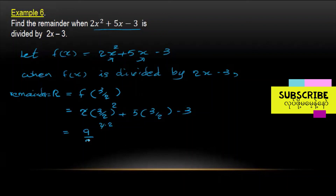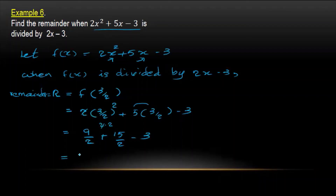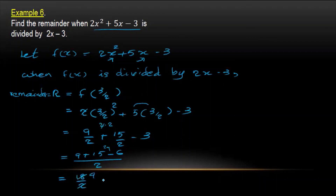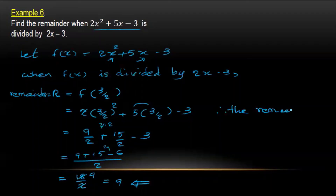Substituting x equals 3/2: 2 into (3/2) squared plus 5 into (3/2) minus 3. That gives 2 into 9/4 plus 15/2 minus 3, which equals 9/2 plus 15/2 minus 3, and the remainder is calculated from this expression.